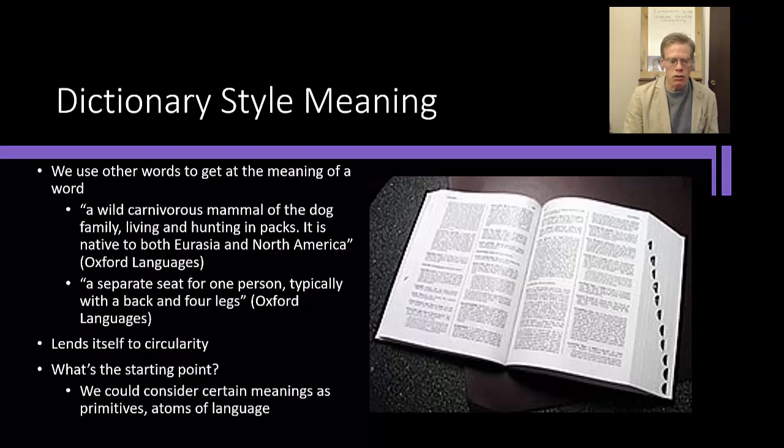So one approach to that is that we consider certain words, certain meanings as primitives, atoms of language that we're in a sense born with, where we have certain primitive notions that we just have hardwired into our brains. And then all other words are built on those words. And I think that gets us around the circularity problem as well.